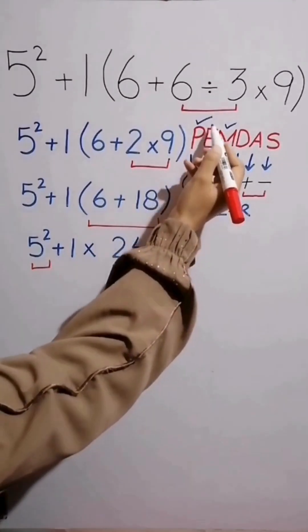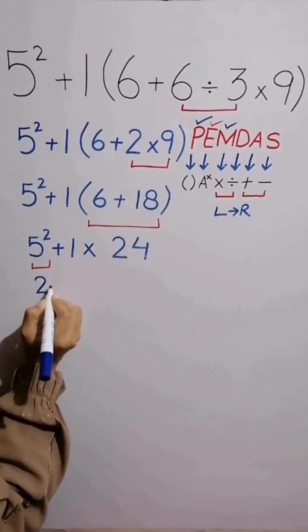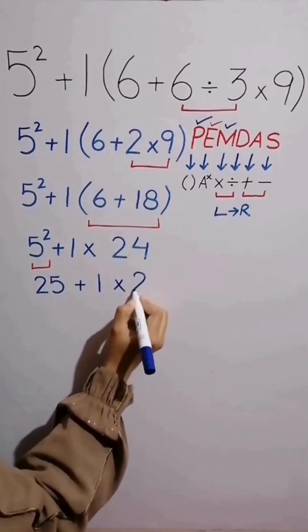5 times 5 equals 25, then bring down remaining values as it is.